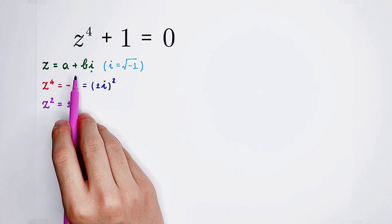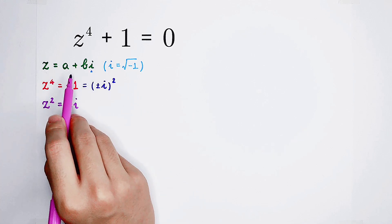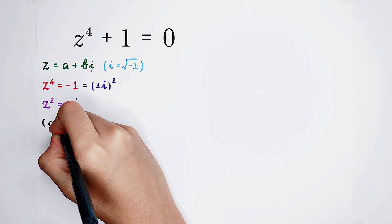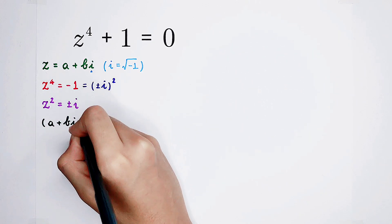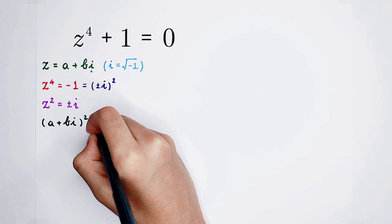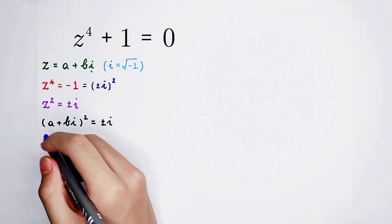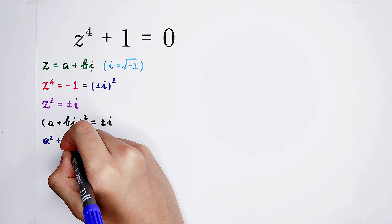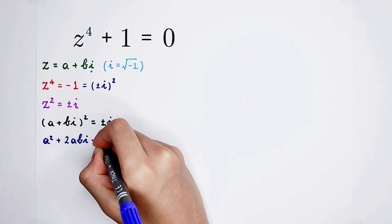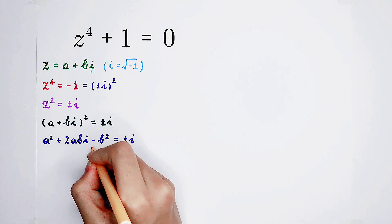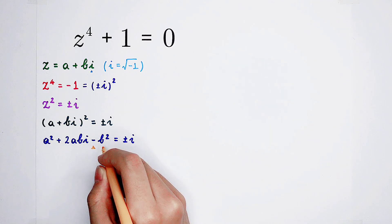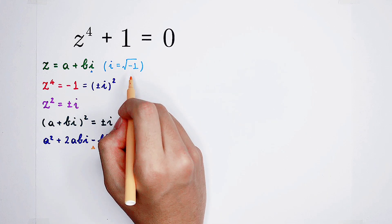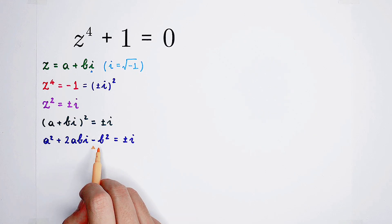Now we substitute a plus bi for z. The left-hand side is a plus bi all squared, and the right-hand side is still positive or negative i. Expanding: a plus bi squared equals a squared plus 2ab times i minus b squared. The coefficient of b squared is negative because bi squared equals b squared times i squared, and i squared is negative 1, so bi squared equals negative b squared.